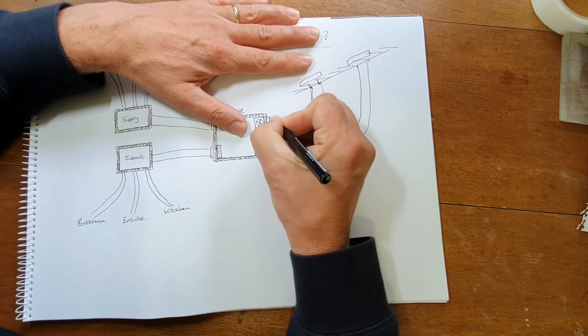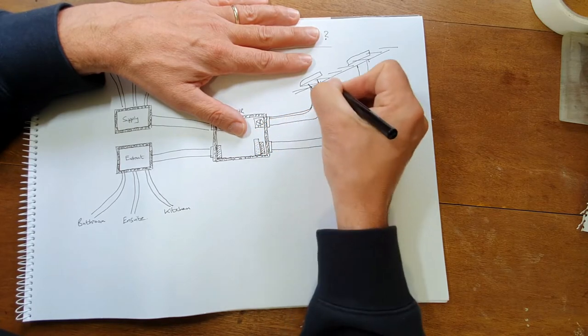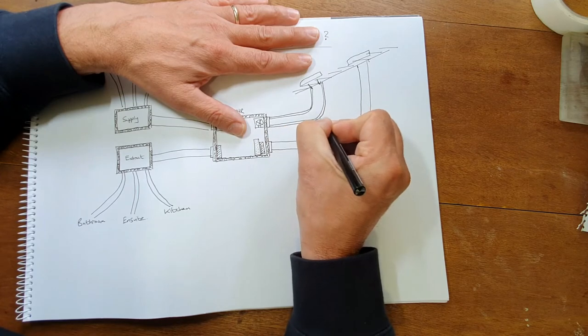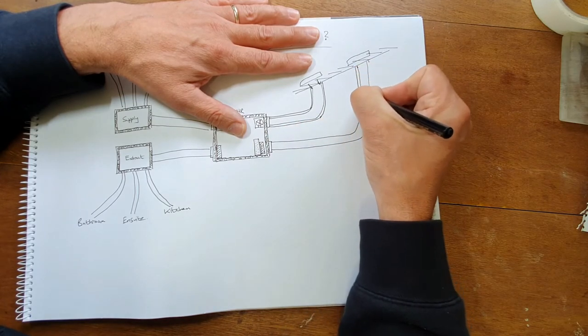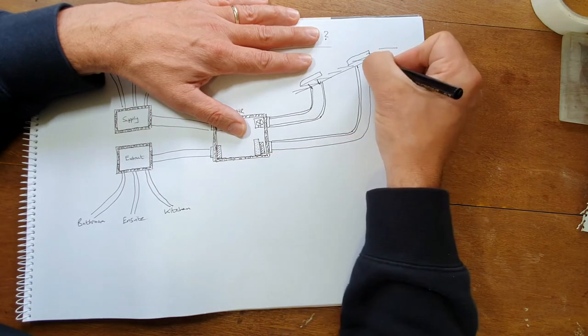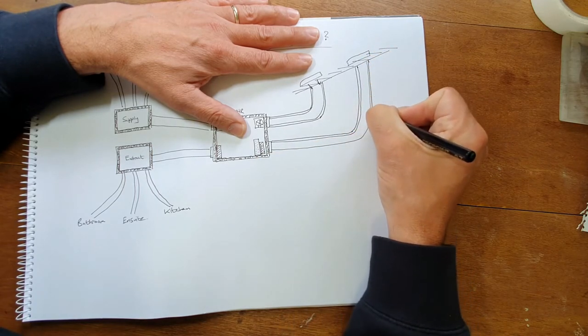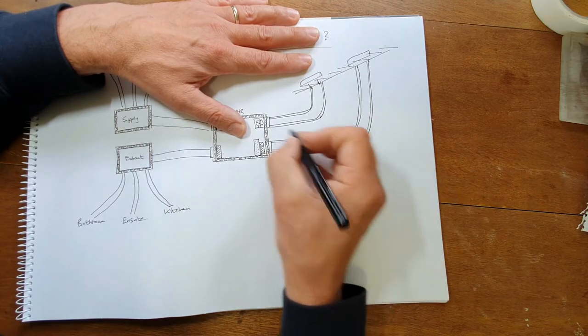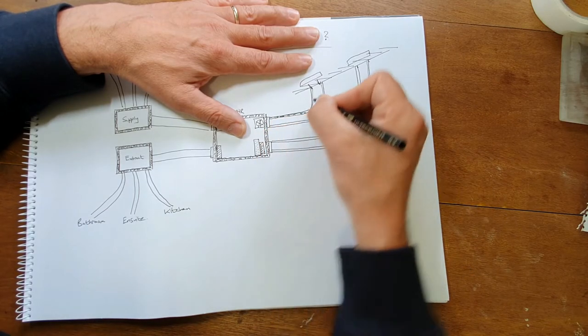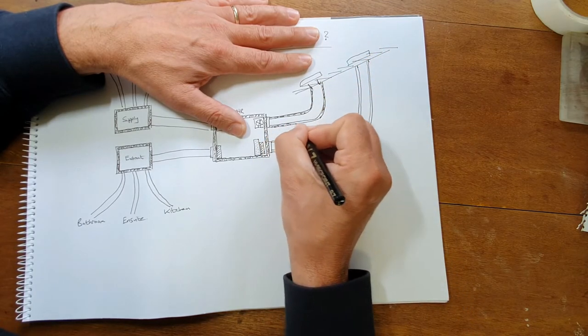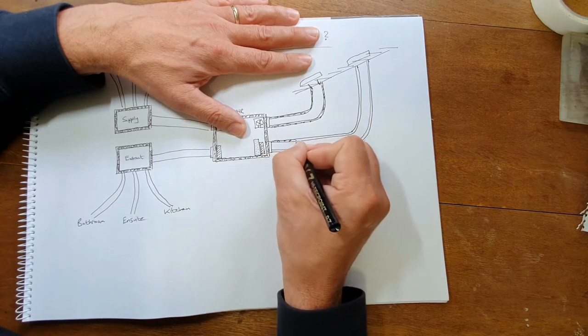This is the duct insulation. It's very important to insulate the ducting that goes between the machine and outside. This is because if you're bringing cold air into a warm space in the middle of winter the outside of the pipe collects condensation quite a lot and that can drip off and drip onto your ceiling and the first you know about it you've got a puddle coming through the ceiling above your head in the living room. So it's very important this is insulated.